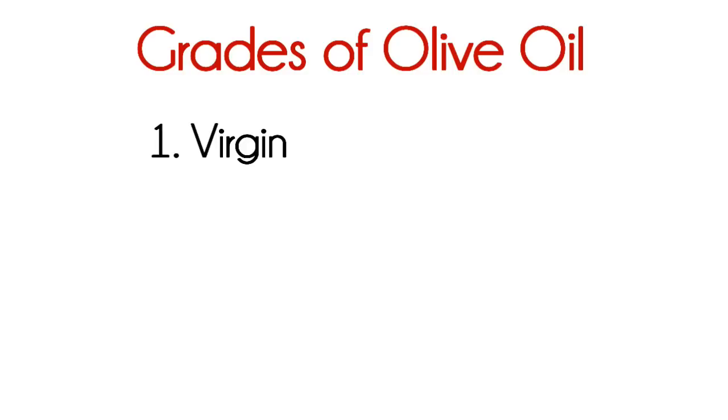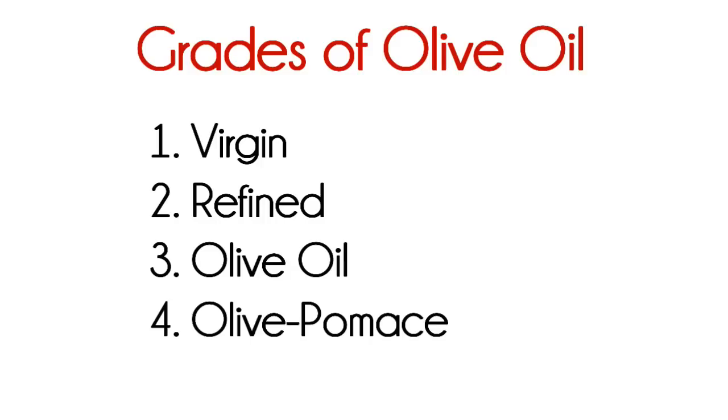The first one is virgin. It's the first pressing of the oils with no chemicals, no heat, and no refinement. The second is refined. It is obtained by refining virgin olive oil that may not have been up to par. The third is olive oil, and it consists of a blend of virgin and refined olive oil.